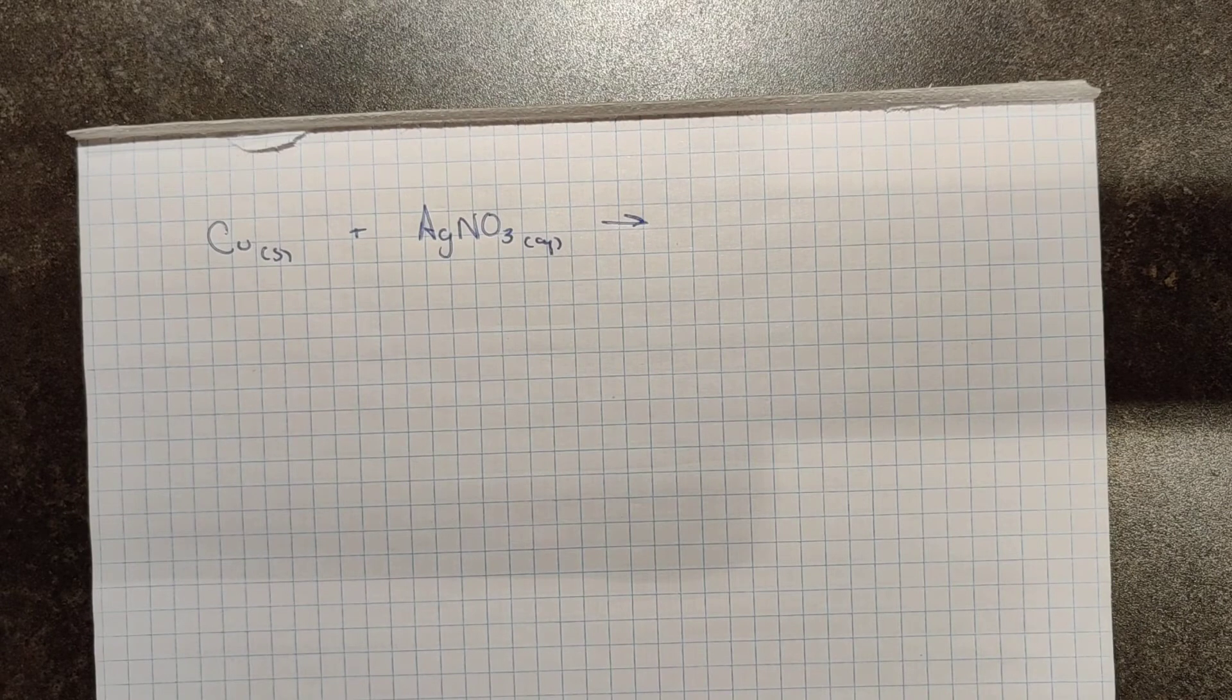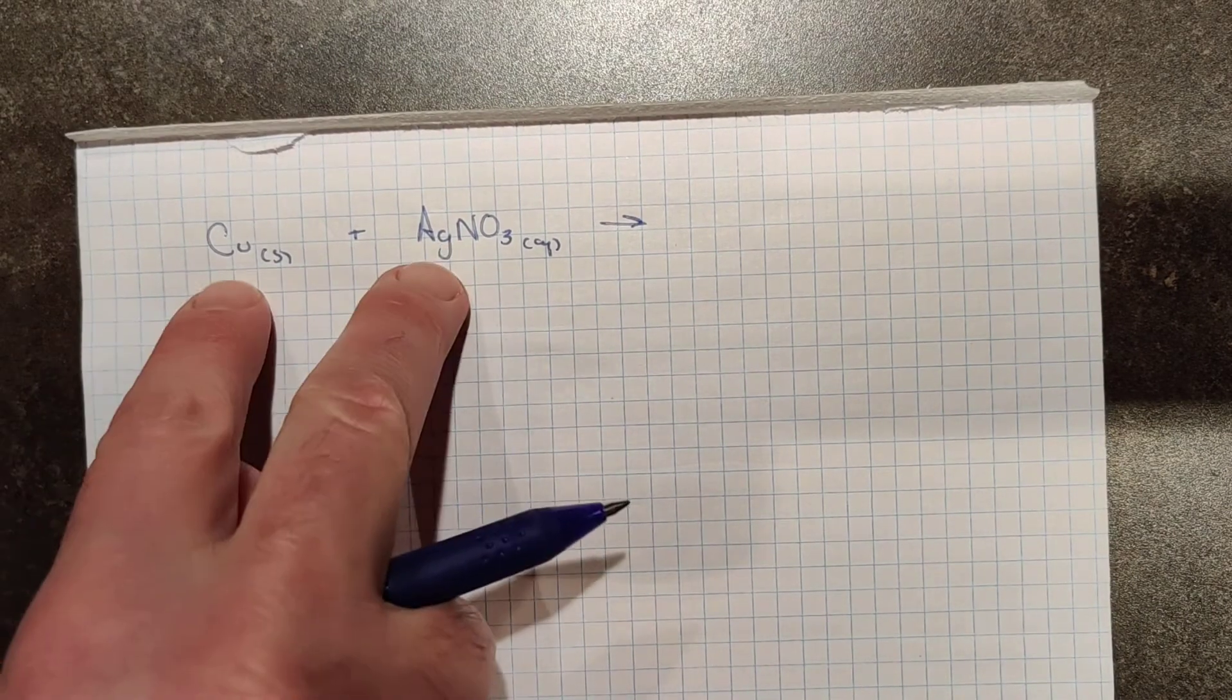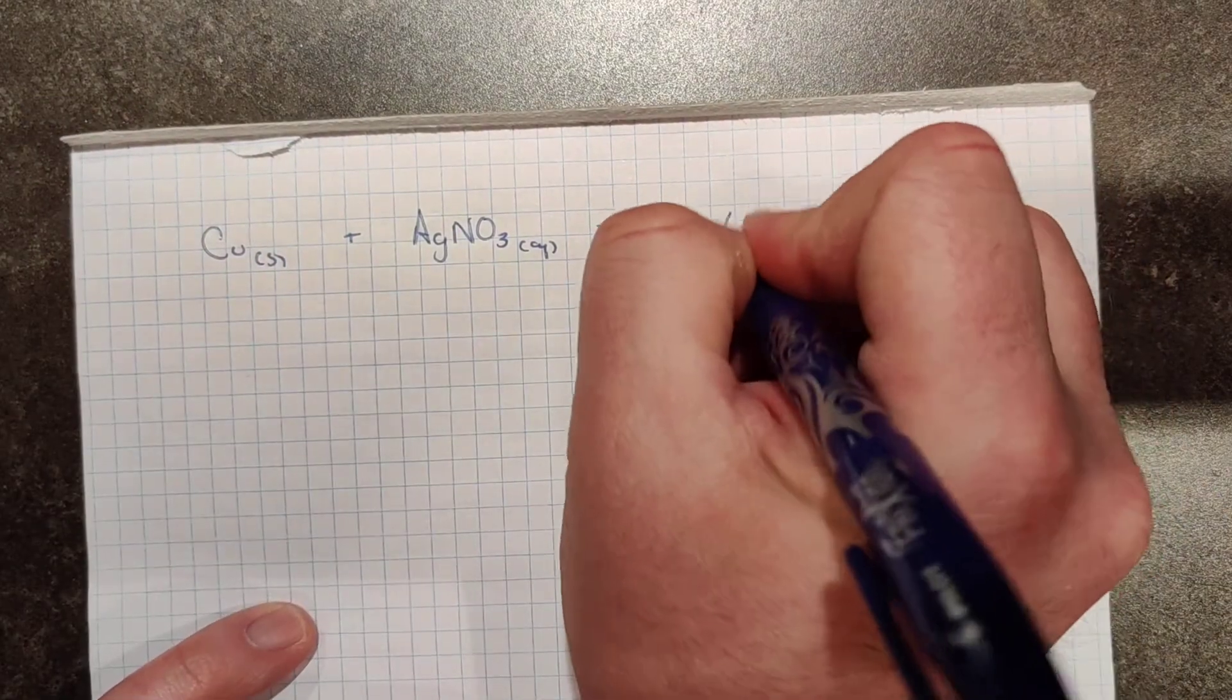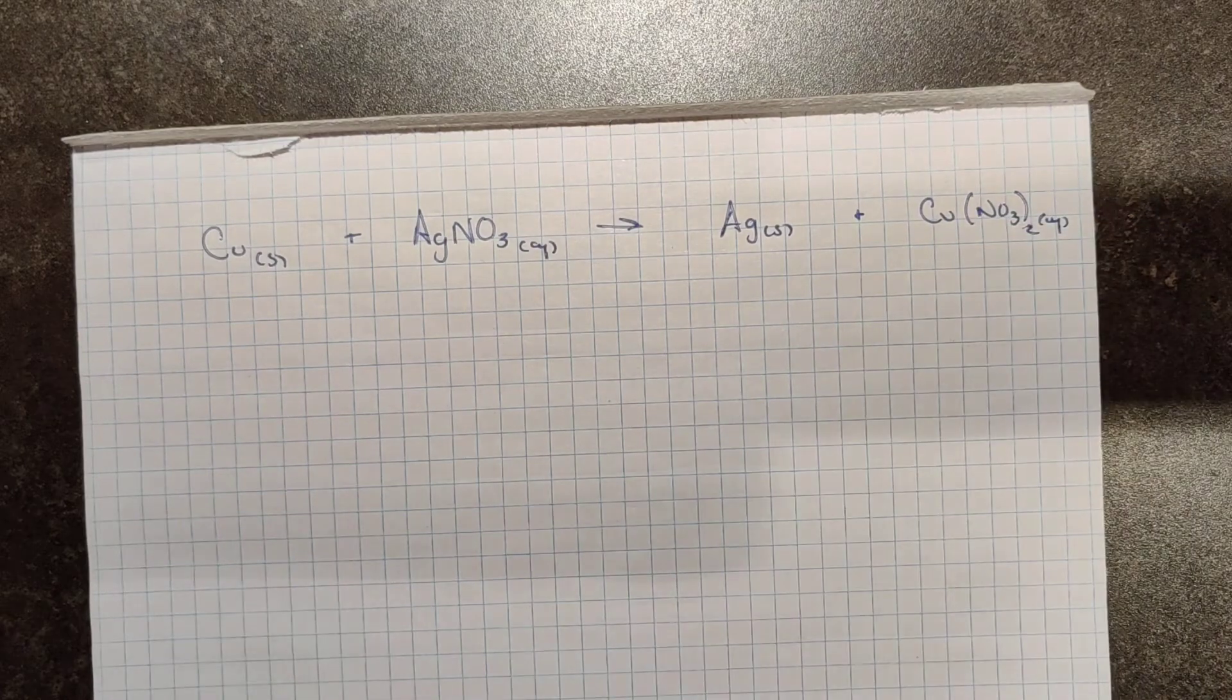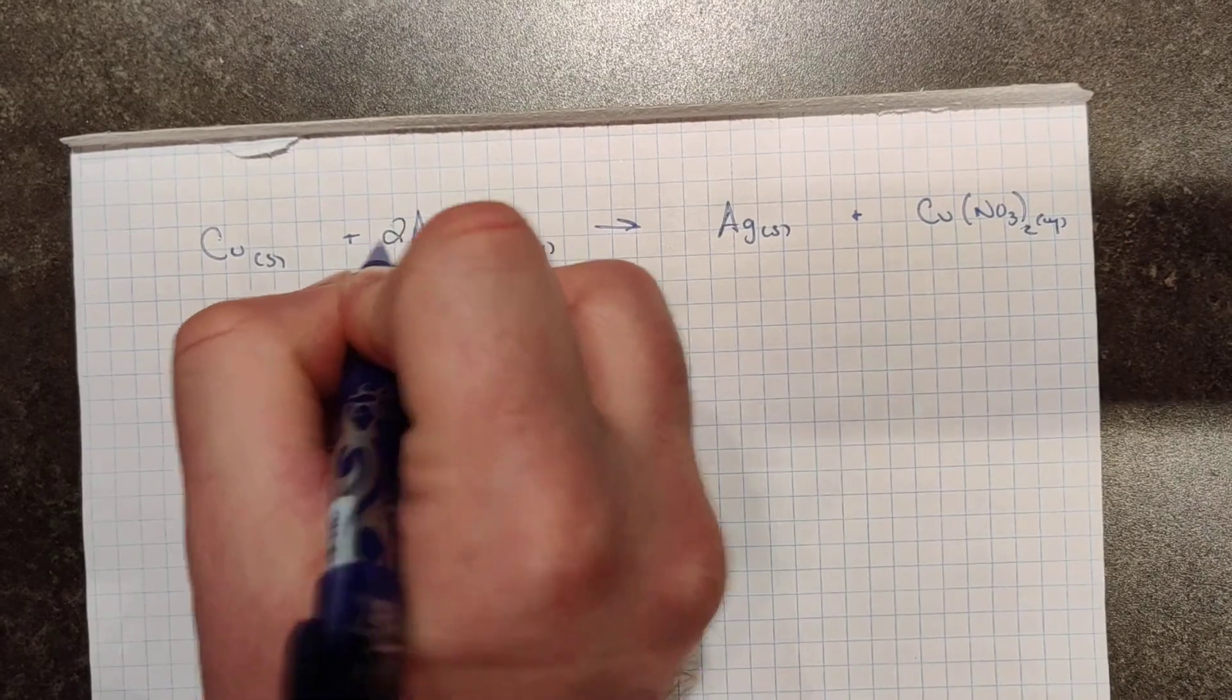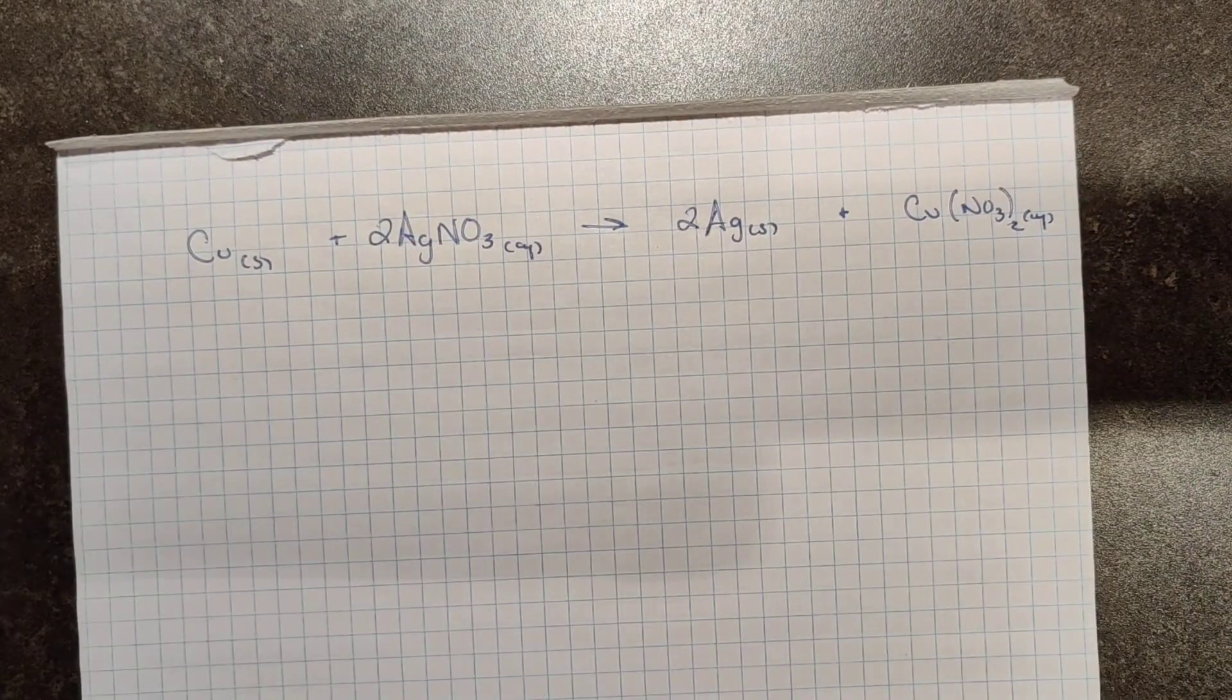Now, in a single replacement reaction, we were taught long ago to follow the cations or the anions, and I have two metals or two cations here, so they replace each other, meaning that silver now exists elementally, and it is copper 2 nitrate that gets formed. We can go through and balance this. I have two nitrates, which needs two silver nitrates. It gives me two silvers, and the coppers are good.